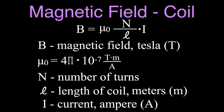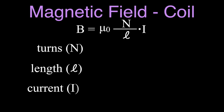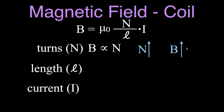Before showing the other two forms, let's go over the relationships between N, L, I, and the magnetic field strength B. There are three things that can affect B. N is in the numerator of the fraction, so B and N are directly proportional to each other. If we increase the number of windings — keeping the length and current the same — we increase the magnetic field strength. Decrease the number of turns, and the magnetic field strength also decreases.